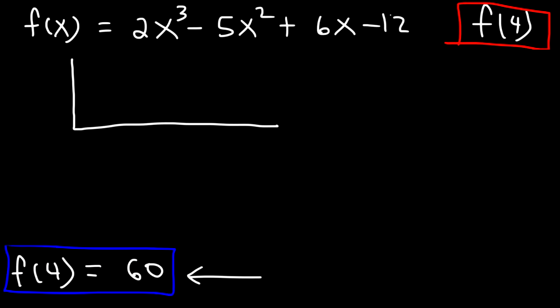So first, I'm going to take the coefficients of the polynomial expression and write them here. 2, negative 5, 6, and negative 12. Then I'm going to take the number 4 and write it here. So first, let's bring down the 2. And when doing synthetic division, remember to multiply and then add and repeat. So multiply, add, multiply, add. And just keep doing that.